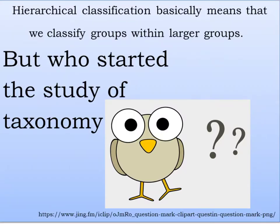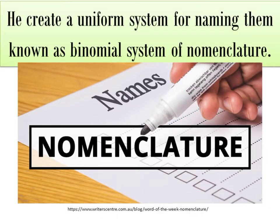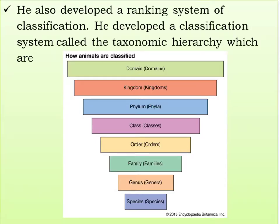Hierarchical classification basically means that we classify groups within larger groups. Swedish naturalist and explorer Carolus Linnaeus was the first to frame principles for defining natural genera and species of organisms. He created a uniform system for naming them known as the binomial system of nomenclature. He is a botanist known as the father of modern taxonomy, and he also developed a ranking system of classification.